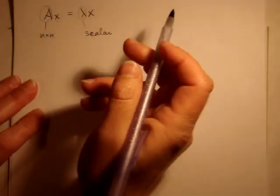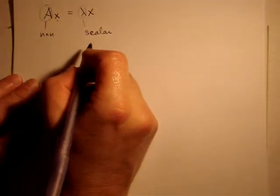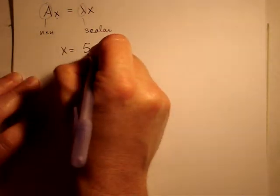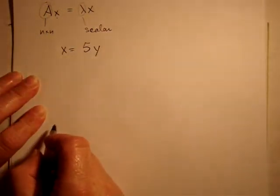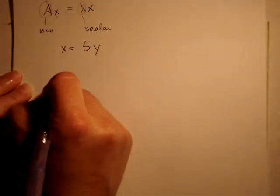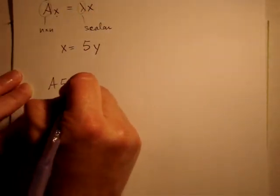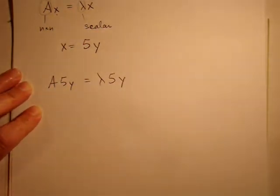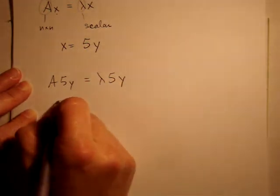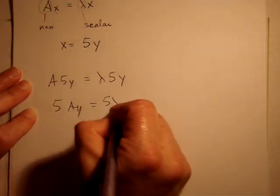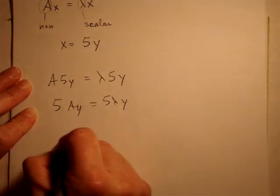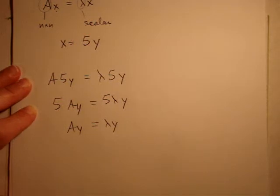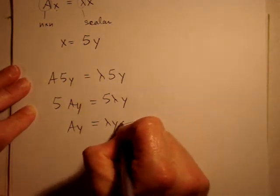Just looking at this equation, we can see that if we say x equals 5 times y, and put that into our equation, we get A times 5y equals lambda times 5y. And 5 is a scalar. I'm going to pull it out, and we can divide by it. So now Ay equals lambda y, and so that has told us that y is also an eigenvector.